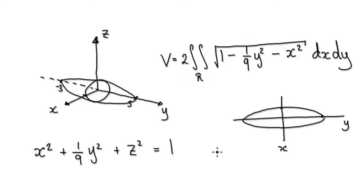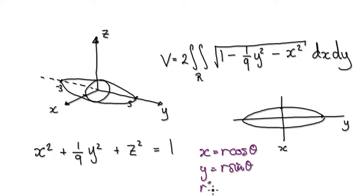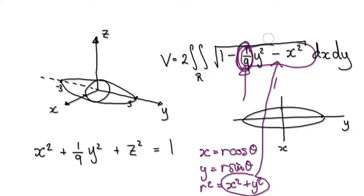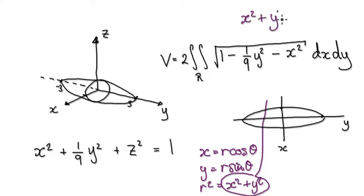We can use polar coordinates. Whenever you're working with polar coordinates, remember: x equals r cos θ, y equals r sin θ, and r² equals x² plus y². But we've got this pesky 1/9 factor here — you can't replace the expression with r² because you don't have a perfect x² plus y²; you've got this annoying constant.